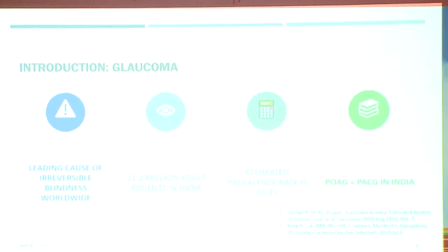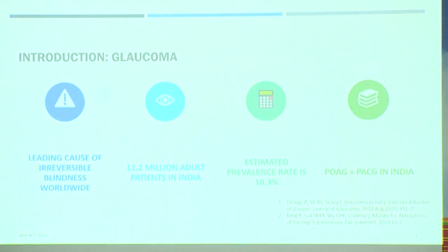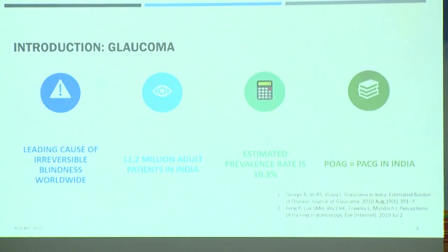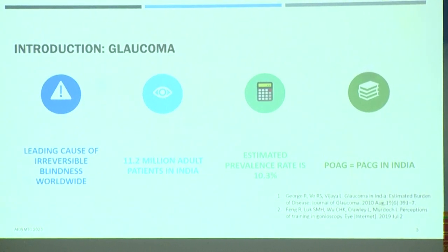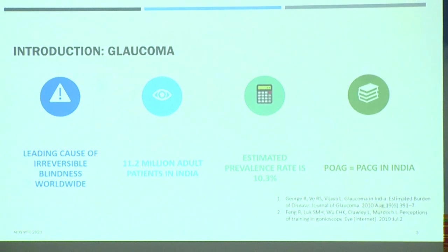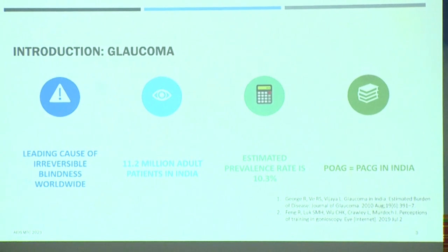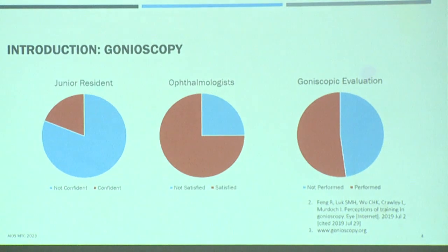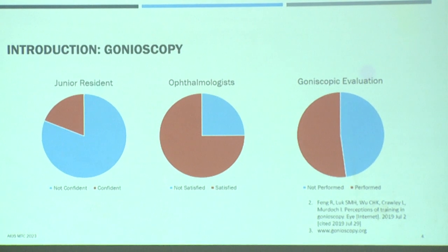Glaucoma, as we all know, is the leading cause of irreversible blindness worldwide, and India has a much higher incidence of angle-closure glaucoma compared to the world. The only way to differentiate open and closed angle is with gonioscopy, but it is not performed in all patients. In fact, only half of the patients visiting a glaucoma clinic in the US get a gonioscopy done at baseline.